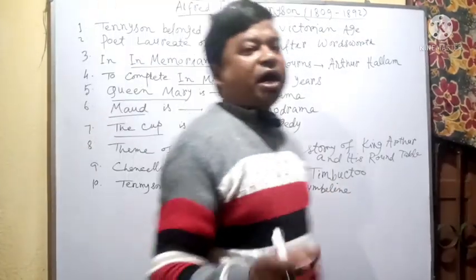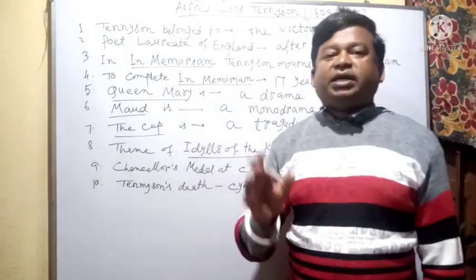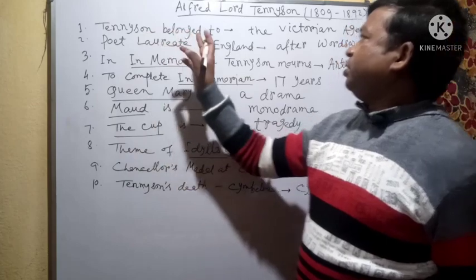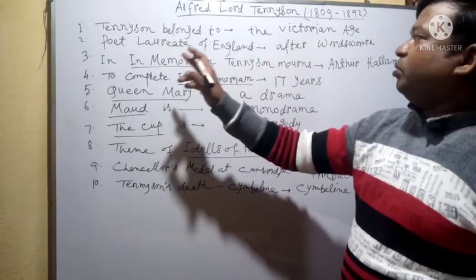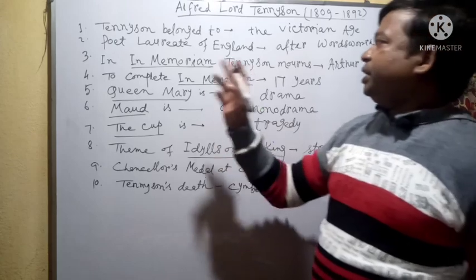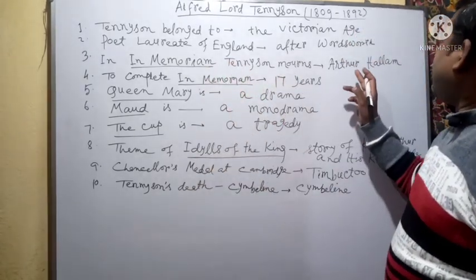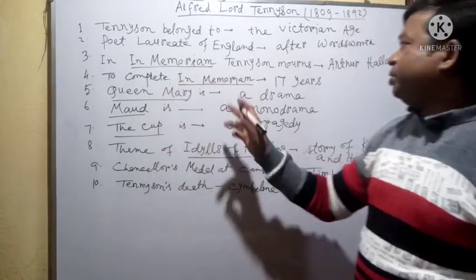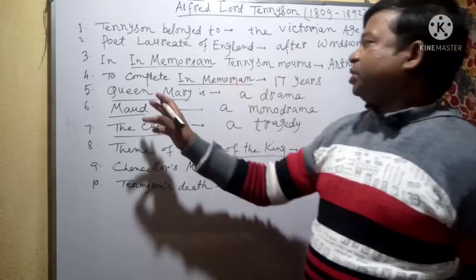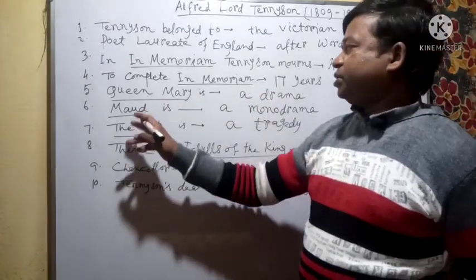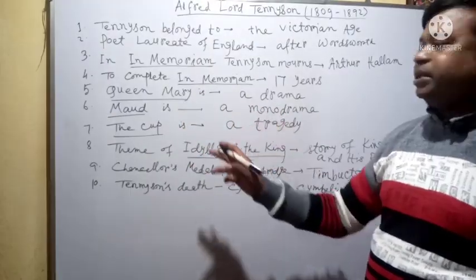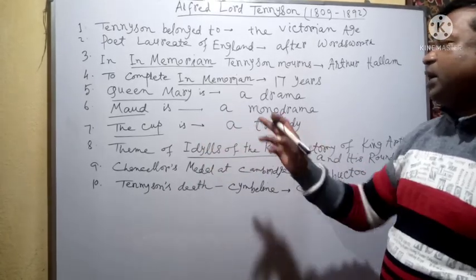Now friends, let me repeat all the questions and their answers. Alfred Lord Tennyson, 1809 to 1892. 1: Tennyson belonged to the Victorian age. 2: Tennyson became Poet Laureate of England after Wordsworth. 3: In In Memoriam, Tennyson mourns the death of Arthur Hallam. 4: Tennyson took 17 years to complete In Memoriam. 5: Tennyson's Queen Mary is a drama. 6: Tennyson's Maud is a monodrama. 7: The Cup is a tragedy.